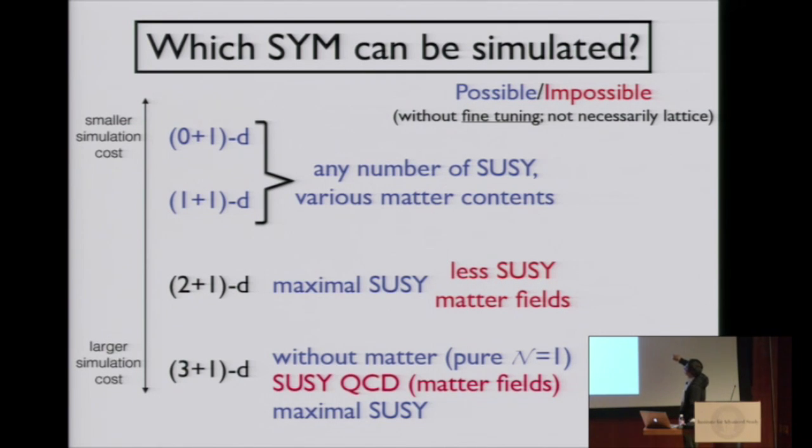In lower dimension, simulation cost is smaller. In higher dimension, simulation cost is larger. It's just because if you go to higher dimension, you need more lattice points to correctly approximate continuum theory.